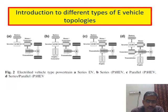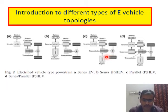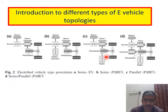Welcome to today's discussion on different types of electric vehicle powertrain types. The EV powertrain is classified into four different types: Series EV, Series HEV, Parallel HEV, and Series Parallel HEV. Each type has its own advantages and disadvantages, and based on our requirement, we have to choose the particular type which is suitable for our application.